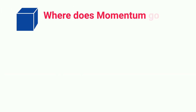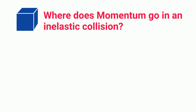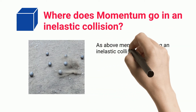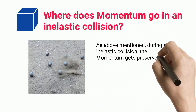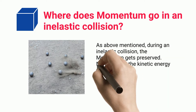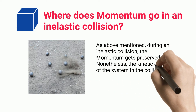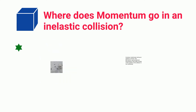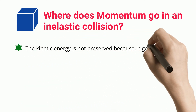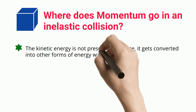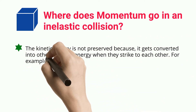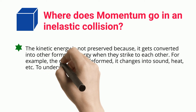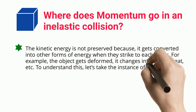Where does momentum go in an inelastic collision? During an inelastic collision, the momentum gets preserved. Nonetheless, the kinetic energy of the system is not conserved. The kinetic energy is not preserved because it gets converted into other forms of energy when the objects strike each other — for example, the object gets deformed, and energy changes into sound, heat, etc.